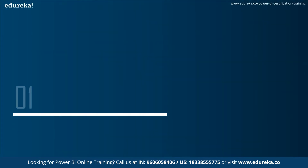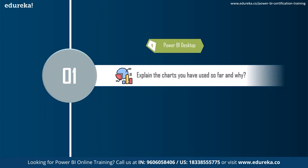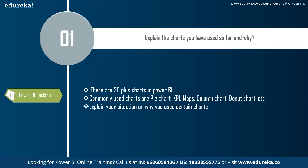Our first section is Power BI Desktop. The first question is: explain the charts you have used so far and why. The interviewer not only wants to know your knowledge of charts but also why you are using them. For example, for comparing year on year on a project, you could use a waterfall chart. The key feature of a waterfall chart is that it shows changes not only over time but in relation to the previous period.